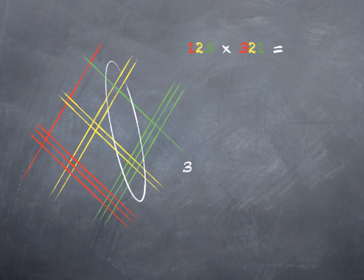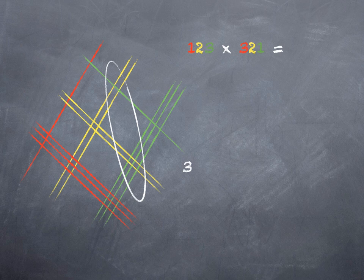Next up, I have yellow intersecting green, which means I'm getting tens and ones. So out of that, I'm going to get tens. If I count up those intersections, there are 8, so 8 goes in the tens place.